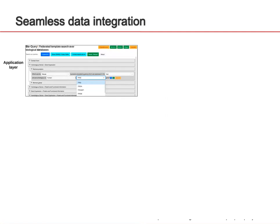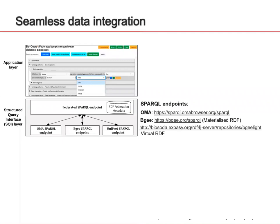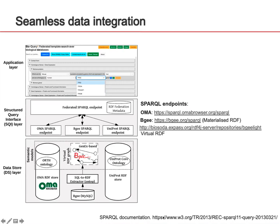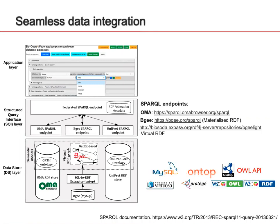The architecture of our system is divided into three layers. One is the application layer, which is completely independent of the other layers. The second is the structured query interface layer, where seamless data integration happens and data is combined based on the metadata. We rely on the SPARQL query language for this. Finally, the third is the data store layer, composed of the databases we want to integrate, which are kept as they are. These are some of the technologies used to develop this system.